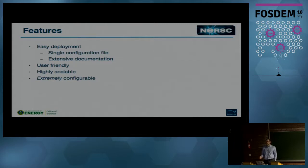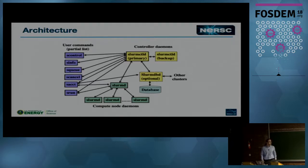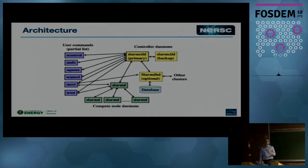Some features of Slurm that make it nice from the administrative side: it's very easy to deploy with a single configuration file, and the documentation is extensive. It's pretty user-friendly if you're coming from HPC. It's highly scalable and extremely configurable, which is both a good and a bad thing — you can do anything you want, but it can get out of hand if you're not careful. The architecture is simple: you have a controller, a database server that tracks jobs and resource usage, a Slurmd that runs on compute nodes and communicates hierarchically. Programs like SControl check node state and SQ checks job queue status, both communicating with the controller. There is no single point of failure, so you can keep it running virtually disruption-free.